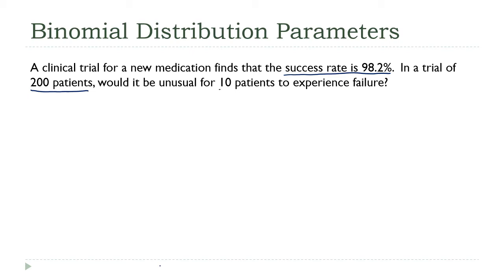What I'm asking here is our classic question: would it be unusual for 10 patients to experience failure? That's where the x comes in, right? I can look at a certain number out of those 200 and say, well, how likely is it for this to happen or how unlikely?